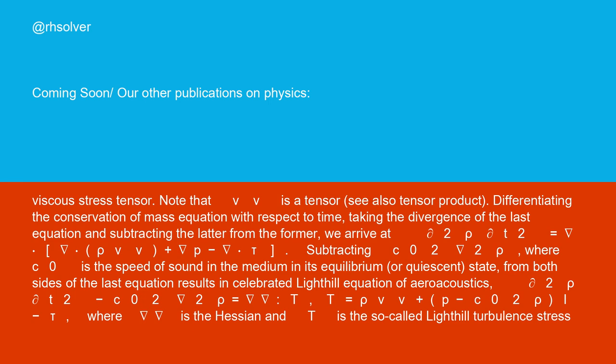Subtracting c₀²∇²ρ, where c₀ is the speed of sound in the medium in its equilibrium, or quiescent, state, from both sides of the last equation results in celebrated Lighthill equation of aeroacoustics.